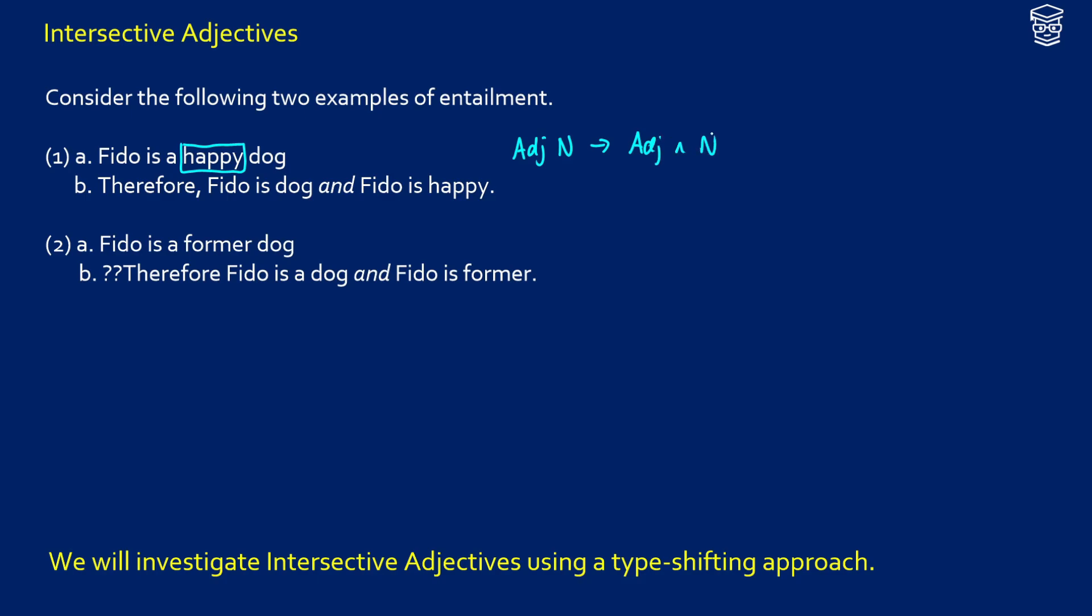So they have both of those properties independent. What about in this example? Fido is a former dog. So what does this mean? Well, you would want to say if this were the same type of adjective, that an adjective plus a noun would give us them being the property of being an adjective plus a noun.